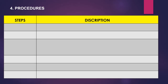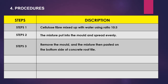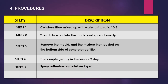To produce the composite roof tile, there are several steps. Step one: the cellulose fiber was mixed with water at a ratio of 10 to 3. Step two: the mixture was put into a mold and spread evenly. Step three: the mold was removed and the mixture was pasted onto the bottom side of the concrete roof tile. Step four: the sample was dried in the sun for two days. Step five: the cellulose fiber was sprayed with adhesive spray.